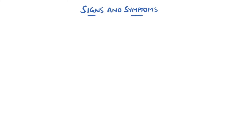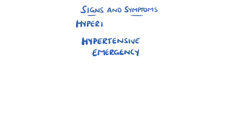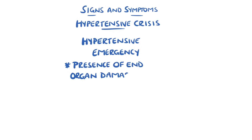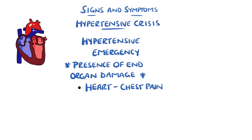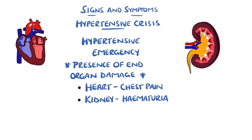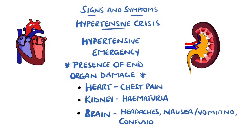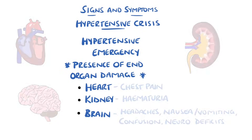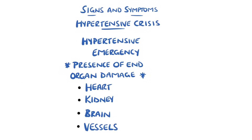If the blood pressure is high enough, there can be damage to the organs, termed end organ damage. This would be known as a hypertensive emergency, which is a form of hypertensive crisis. Examples could be chest pain if the heart is damaged, blood in the urine if the kidneys are involved, and if the brain is involved there may be headaches, confusion, and nausea and vomiting — known as hypertensive encephalopathy — or even neurological deficits if there is a stroke. We also mentioned aneurysms and dissection, which are due to damage to the vessels themselves.